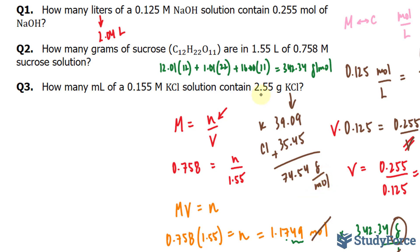Now using this number and 2.55, we can find the number of moles. So let's go ahead and find the number of moles. We will take 2.55 grams and multiply it by the flipped version of this.